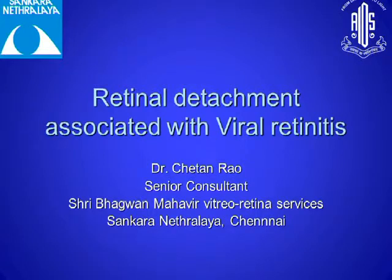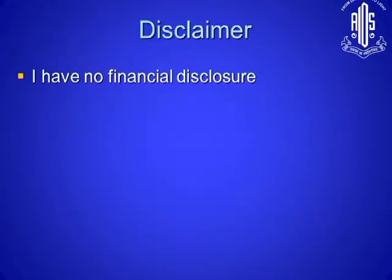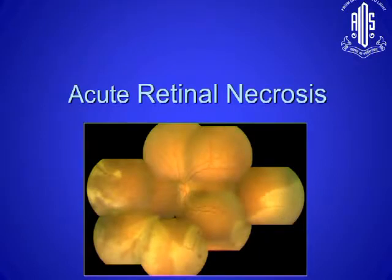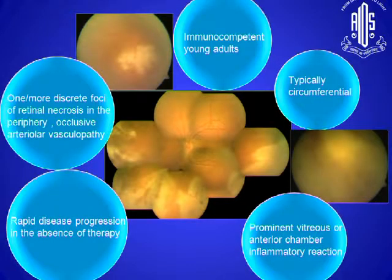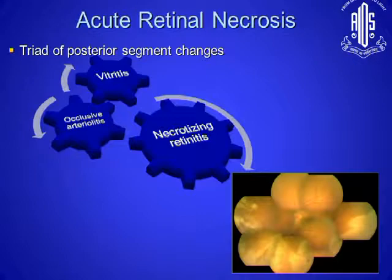I am going to talk about retinal detachment associated with viral retinitis. Acute retinal necrosis is a fulminant disease usually seen in immunocompetent young adults. It starts as changes we see in the posterior segment. We see a lot of arteritis, occlusive arterialitis, and it is directly associated with necrotizing retinitis.